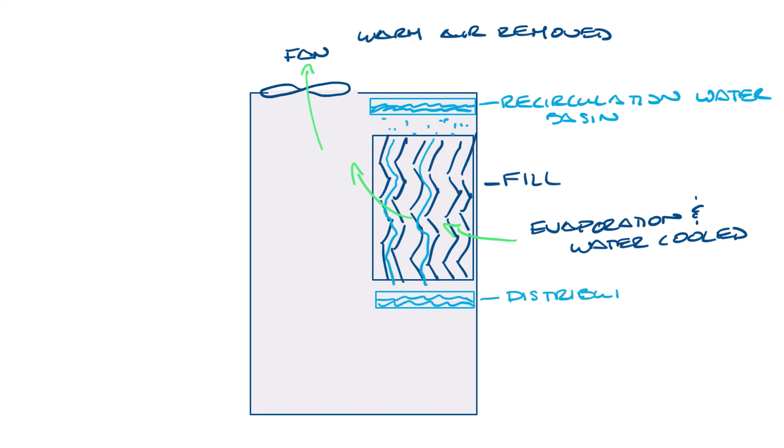Air is drawn in through it and evaporation happens and the water is cooled and the warm air is removed. Then the water goes to a distribution basin. Below that is the coil. So the hot process fluid is going through the coil and as recirculation water is distributed over the coil, it cools the process fluid.